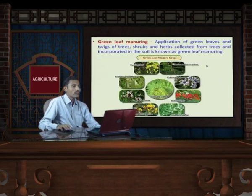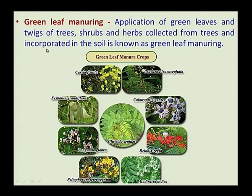Another type of green manure is green leaf manure. In this, green leaves and twigs of trees, shrubs, and herbs collected from trees are incorporated into the soil for the purpose of providing nutrition. Important trees for green leaf manure are Cassia fistula, Leucaena leucocephala, Sesbania grandiflora, Calotropis gigantea, Gliricidia sepium, Pongamia glabra, Dalbergia sissoo, Peltophorum ferrugineum, and Azadirachta indica.